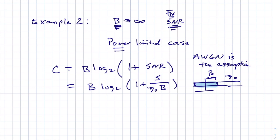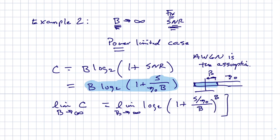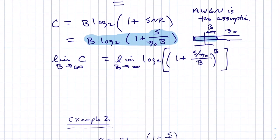Now what I want to do is I want to let the limit as B goes to infinity of C. So this would be limit B goes to infinity of this expression. I'm going to immediately push the B back into the argument of the logarithm. So log 2 of 1 plus, I'm going to write this as S over N naught, and then put the B in the bottom, raised to the B.